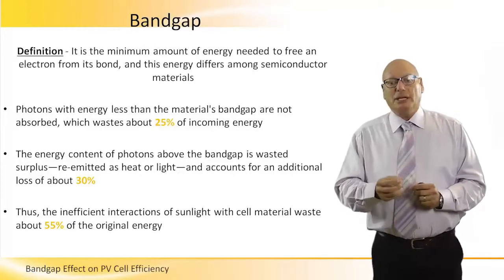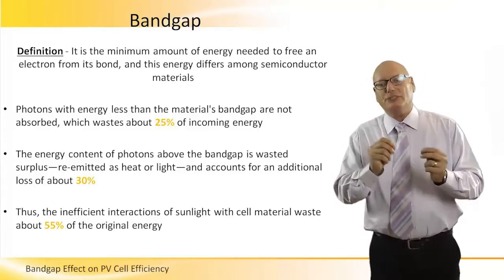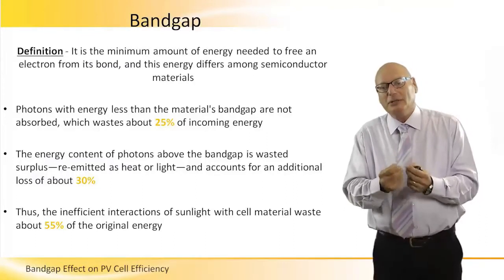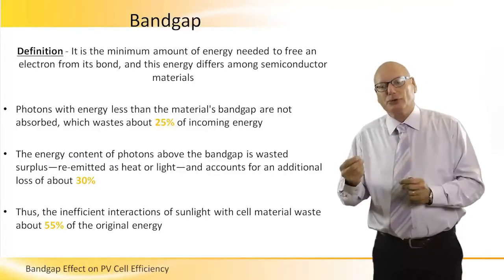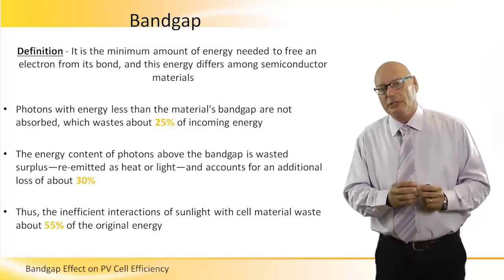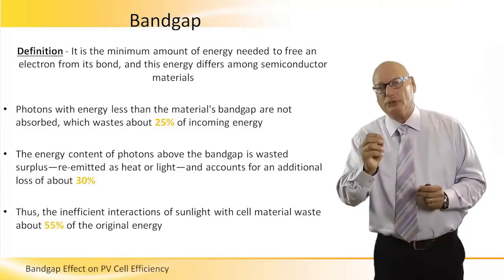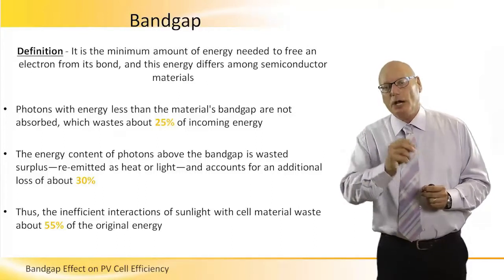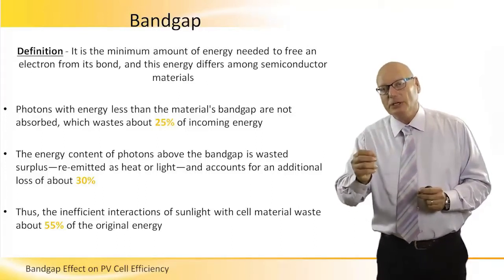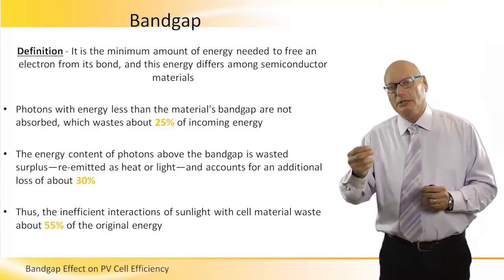Thus, the insufficient interactions of sunlight with cell material waste about 55% of the original energy — 25 plus 30. So only very few photons, less than half, have enough energy to create electrical energy, accounting for only about 30% of the energy.